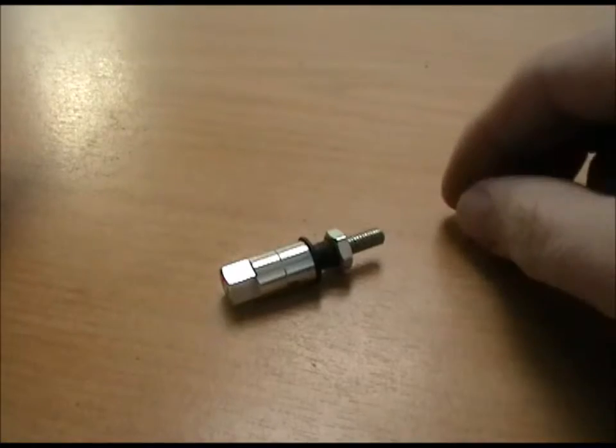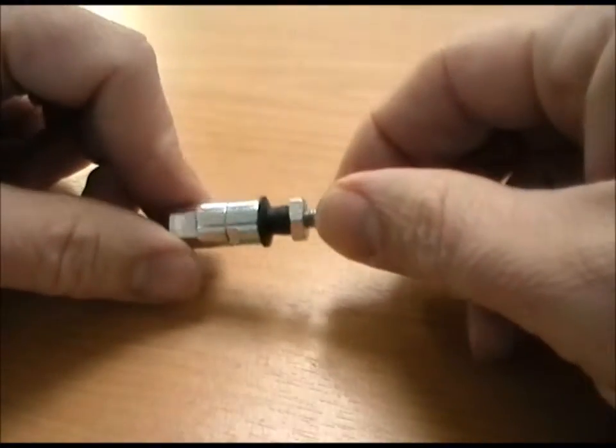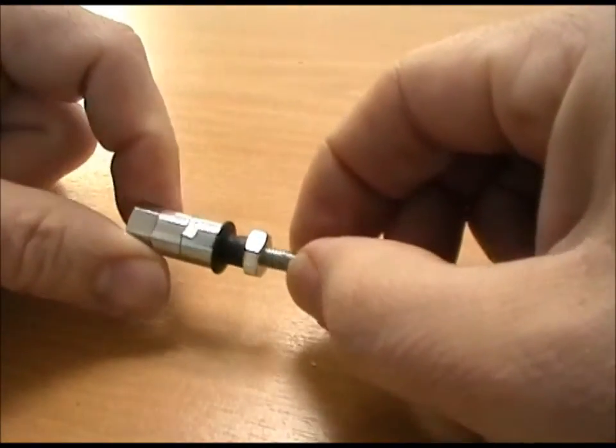This is an example of our IC range. Our IC range was designed for reducing the amount of end play in an inline ball joint.